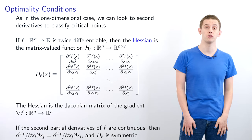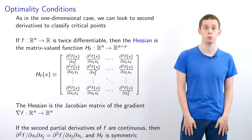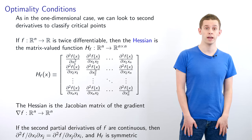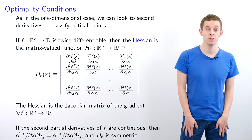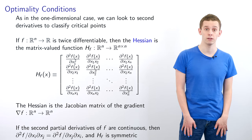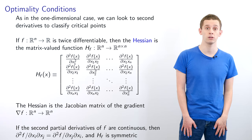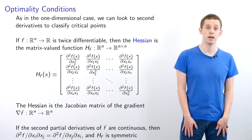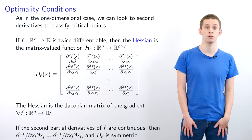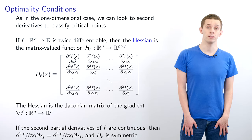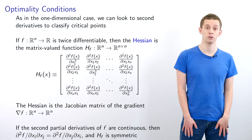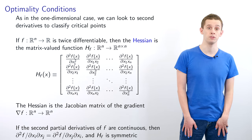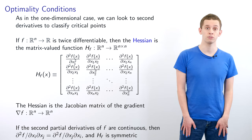As in the one-dimensional case, we can look to second derivatives to classify critical points. If f from ℝⁿ to ℝ is twice differentiable, we define the Hessian as the matrix-valued function Hf from ℝⁿ to ℝⁿˣⁿ with components given by the second partial derivatives of f. Alternatively, the Hessian is the Jacobian matrix of ∇f. If the second partial derivatives are continuous, the ordering of partial derivatives can be interchanged, so Hf will be symmetric.